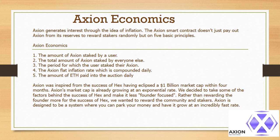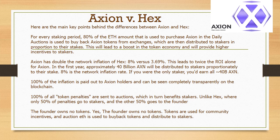Axion was inspired by the success of HEX, having eclipsed a 1 billion dollar market cap within 4 months. Axion's market cap is already growing at an exponential rate. We took some of the factors behind the success of HEX and made it less founder-focused — rather than rewarding the founder more for the success of HEX, we wanted to reward the community and stakers. For every staking period, 80% of the ETH used to purchase Axion in the daily auctions is used to buy back Axion tokens from exchanges, which are then distributed to stakers in proportion to their stakes. This will lead to a boost in the token economy and will provide higher incentives to stakers.